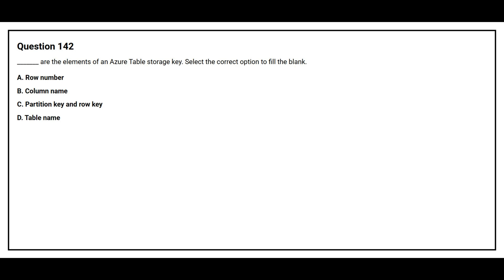Question number 142. What are the elements of an Azure Table Storage key? Option A: Row number. Option B: Column name. Option C: Partition key and row key. Option D: Table name. The correct answer is Option C: Partition key and row key.